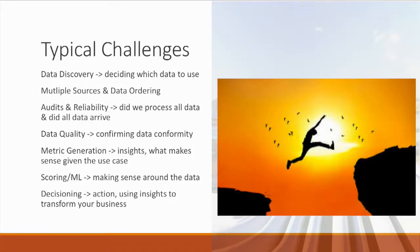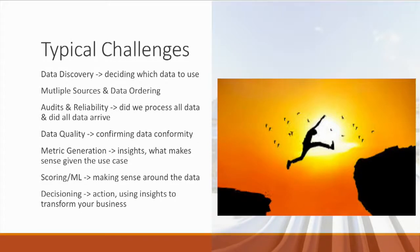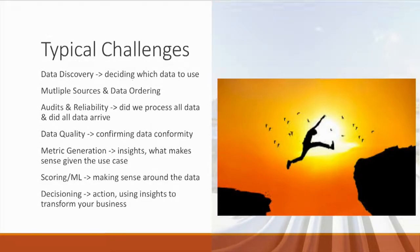Typical challenges when designing these applications start with discovery — what data should you use? Organizations have a lot of data and lineage may not always be there. Then there's multiple sources and data ordering, which becomes very relevant for stream: if you're getting out-of-order events or different streams arriving at different frequencies and latencies, the complexity increases exponentially. With batch, once data has all arrived and you're looking back in time, it's much easier to build those systems, though relevancy may not always be consistent.